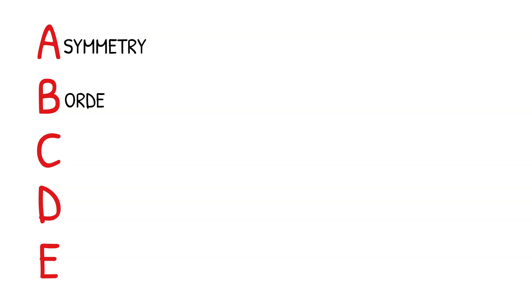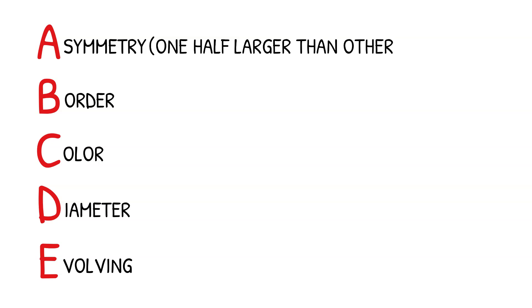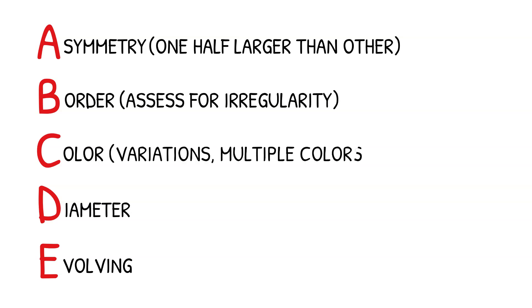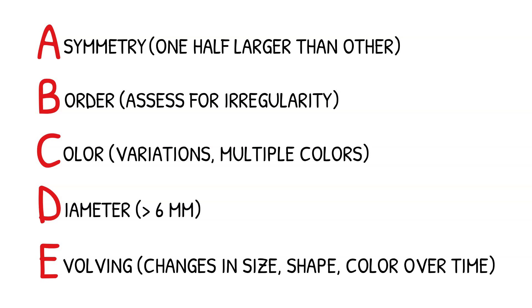Use the ABCDE rule to assess moles or other skin lesions for signs of potential skin cancer. The rule stands for asymmetry, border, color, diameter, and evolving. Check for asymmetry by assessing if the lesion is symmetrical or if one half is larger than the other. Evaluate the border of the lesion to see if it's irregular. Check the lesion for variations in color or the presence of multiple colors. Measure the lesion's diameter to evaluate if it's greater than 6 millimeters. And check for any evolving features such as changes in size, shape, or color of the lesion over time.